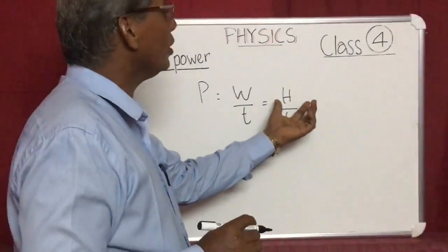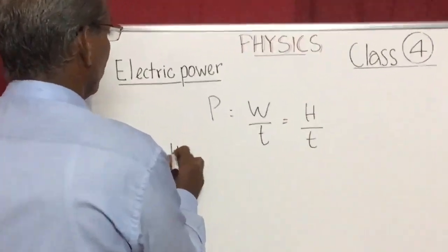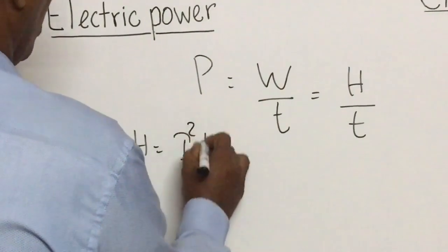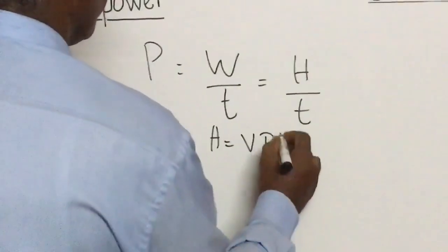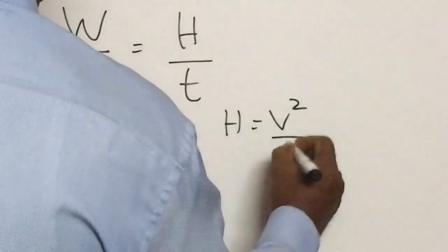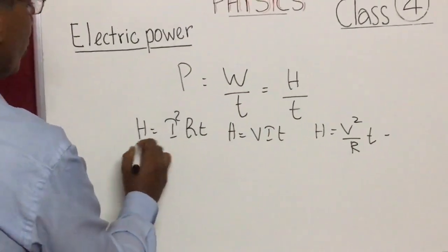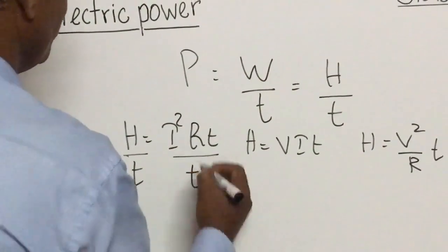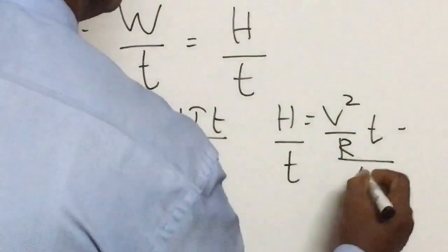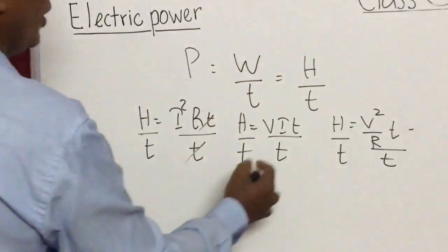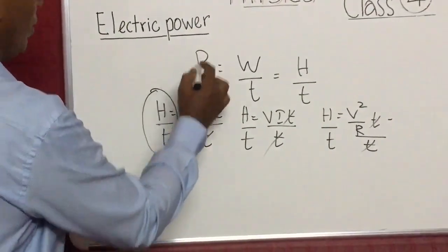Here H is heat energy. From Joule's law we know the expressions for this heat energy: H = I²Rt, H = VIt, and H = (V²/R)t. Therefore H/t — we can cancel the t — and this H/t is nothing but power.